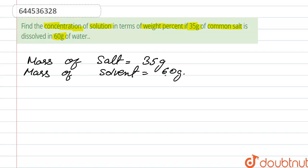So we calculate the total mass of solution. Total mass of solution is solute plus solvent, which is 35 plus 60, giving us 95 grams. We have to find out the concentration.